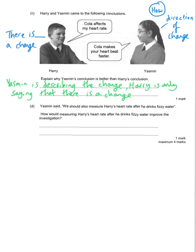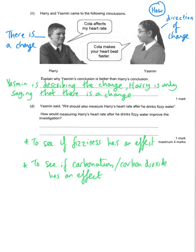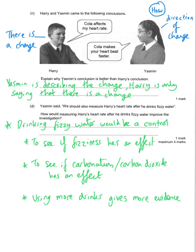Finally, Yasmin said we should also measure Harry's heart rate after he drinks fizzy water. How would measuring that improve the investigation? The benefit of doing this is it would allow us to see whether fizziness has an effect, or whether sparkling drinks have an effect, or to show off we could say that it would allow us to see if the carbon dioxide or the carbonation has had an effect. Or you could say that using more drinks would give you more evidence or different drinks. And the really most technical word that you could say is that drinking fizzy water would be a control, and that's something that you use as your comparison, your reference, when you're trying to prove your results.